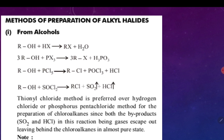The second method: alcohol reacts with PX3 (trihalide of phosphorus) to give alkyl halide (RX), and the side product is H3PO3. In the third reaction, alcohol reacts with PCl5 (pentachloride of phosphorus), and the products are alkyl chloride (RCl) with side products POCl3 and HCl. Remember the side products: reaction with HX gives water; with PX3 gives H3PO3; with PCl5 gives POCl3 and HCl.